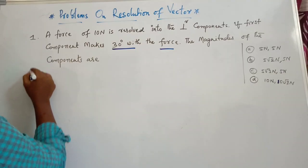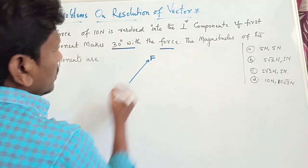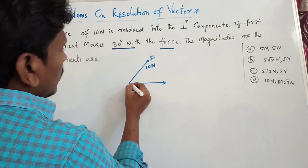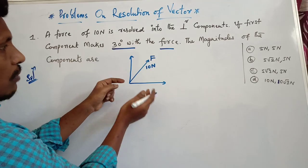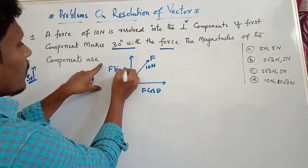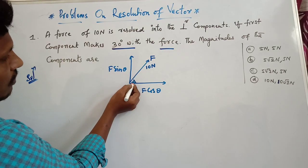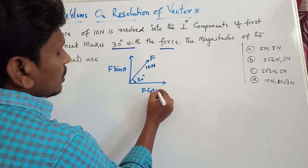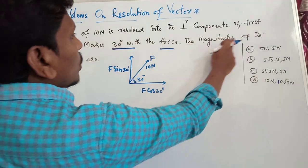Solution: a force of 10 Newtons is resolved into two perpendicular components. Let us consider this is the force — 10 Newtons. Resolved into two perpendicular components: the horizontal component is F cos θ and the vertical component is F sin θ. The angle with the force — that is, with the x-axis — is 30 degrees. So this is F cos 30° and this is F sin 30°. These are the two components whose magnitudes we have to find.